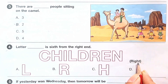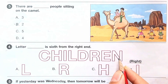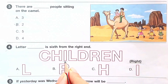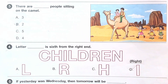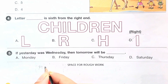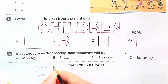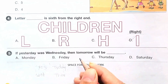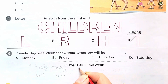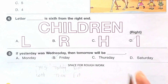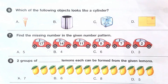This is the right end, so sixth from the right end: first, second, third, fourth, fifth, sixth. So the answer is option B. Question number 5: if yesterday was Wednesday, then tomorrow will be — yesterday was Wednesday, so tomorrow will be Friday. So the answer is option B.